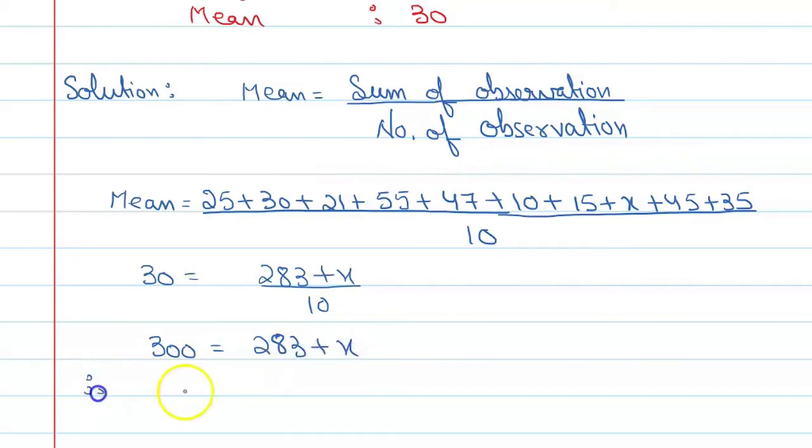Therefore, x is equal to 300 minus 283. So x is equal to 17.